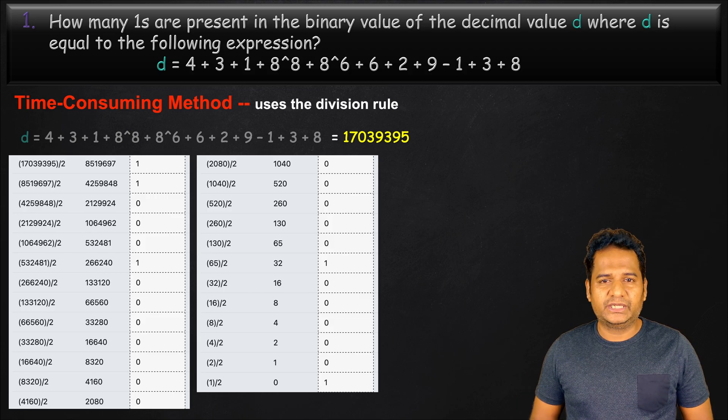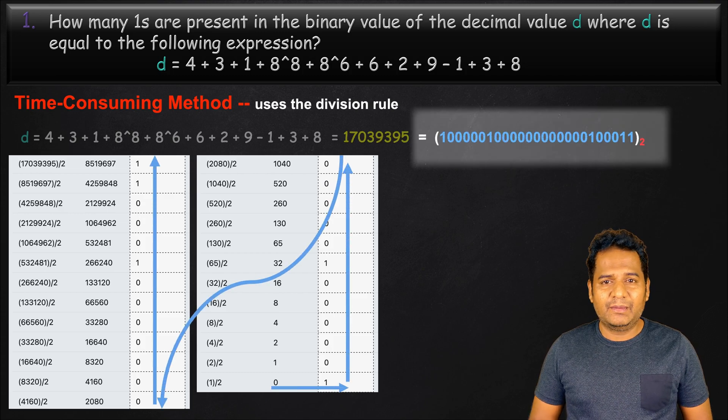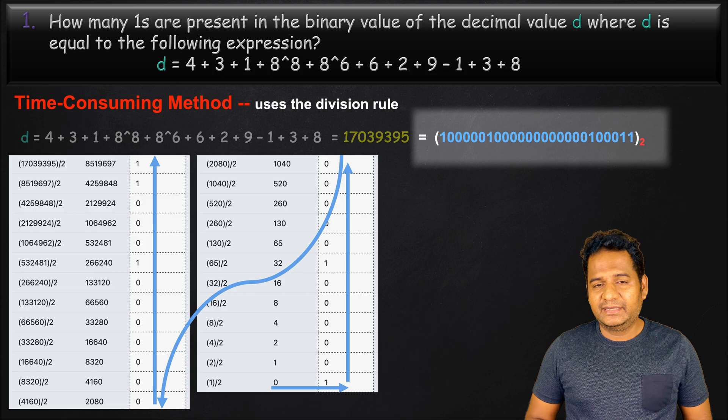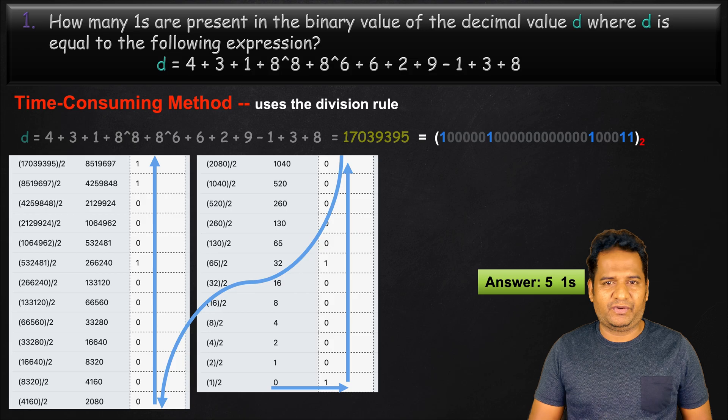If we arrange the last quotient followed by the newest to the oldest remainder, we can get the binary equivalent. Then we can easily see five ones. Hence, the answer to this question is five.